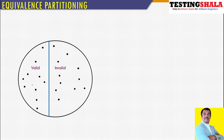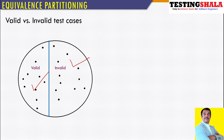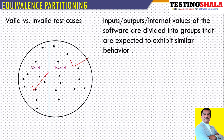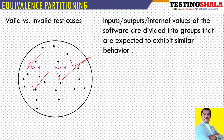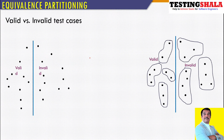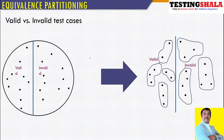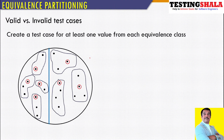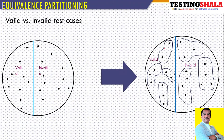Now let's take another example. We have different valid cases with different sets of data, and different sets of data for invalid cases as well. With so many valid and invalid cases, we cannot go and execute all of them. So again, what we have to do is split these things into further groups.